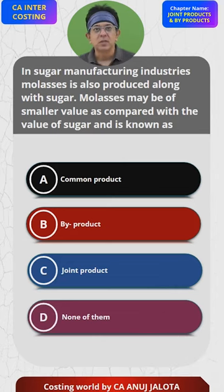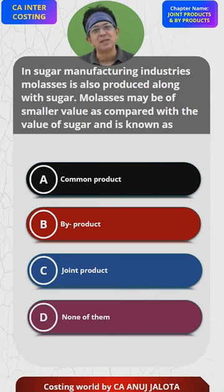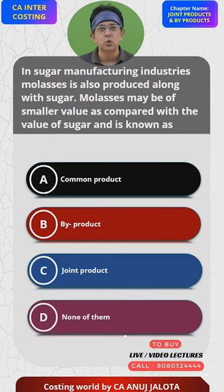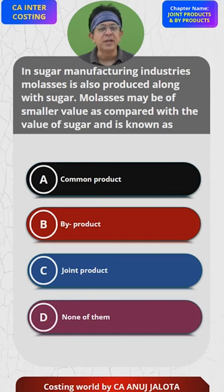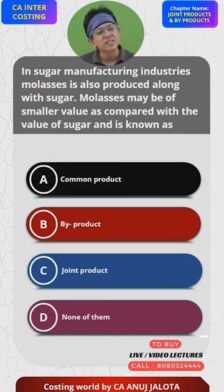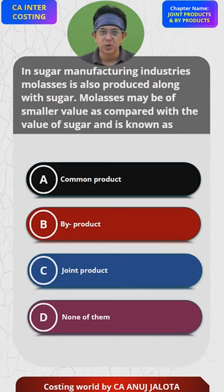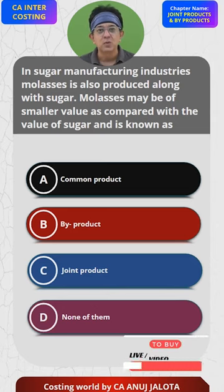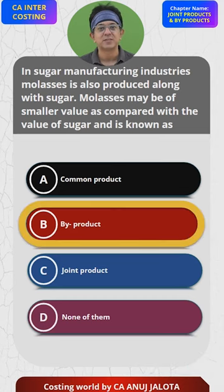The main product is sugar, but along with it, some ancillary product like molasses also gets produced. Our intention was not to produce it, but since it gets produced, why discard it — we can use it for some purpose or sell it and earn some money. Such products which are not your mainline products are called by-products. So the answer is B — that's the correct answer.